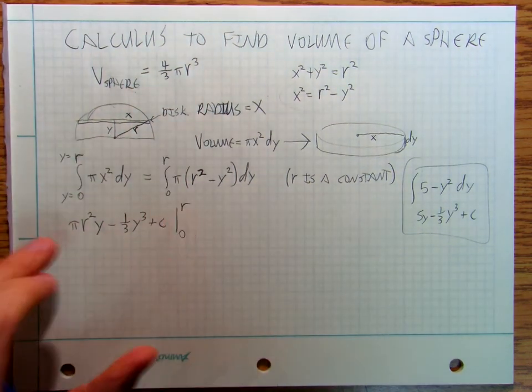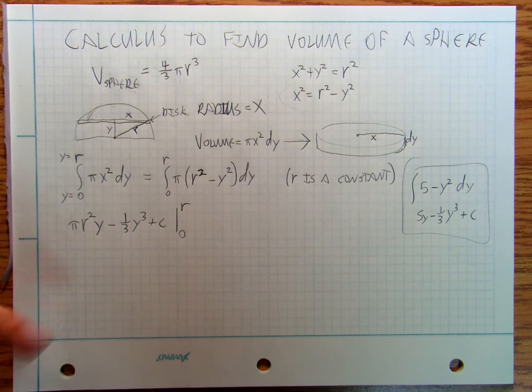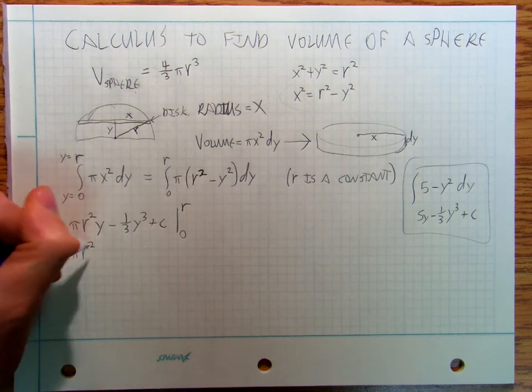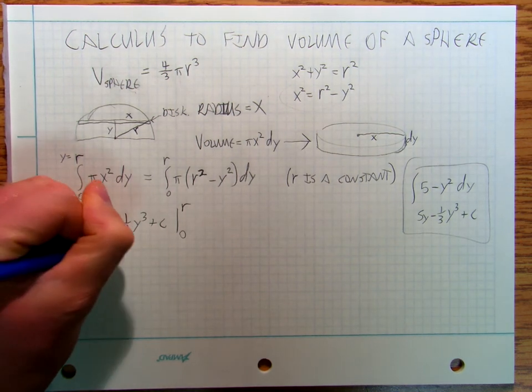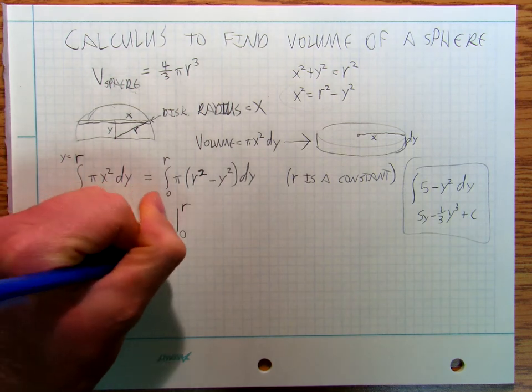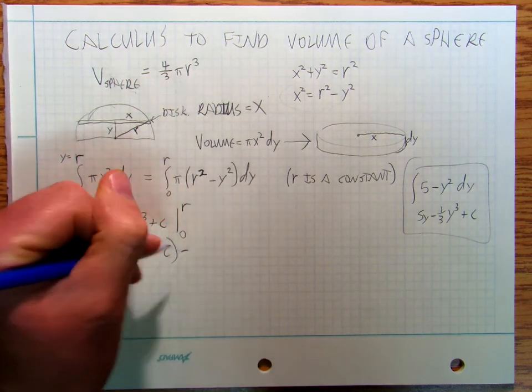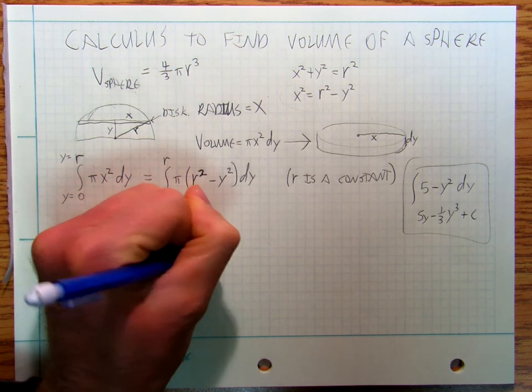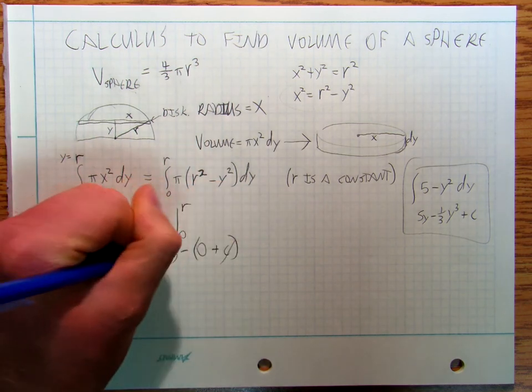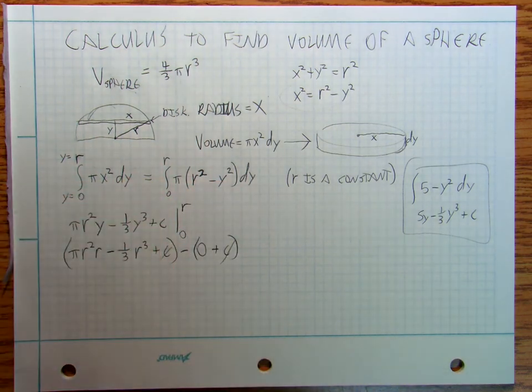And so I plug in r, and I get pi r squared r, minus one third r cubed, plus c, minus zero, plus c. The c's are going to cancel out, and so I've got, oh, I forgot to distribute that pi.